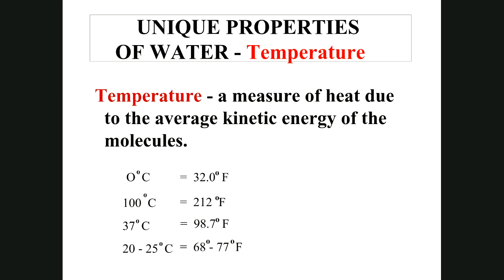Temperature is how we measure kinetic energy, using thermometers. Temperature is a measure of heat due to the average kinetic energy of molecules. Key equivalents: freezing point of water is 0°C / 32°F; boiling point is 100°C / 212°F. Body temperature is 98.6°F or 37°C. Room temperature in school is about 23°C, or 68–77°F.